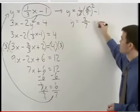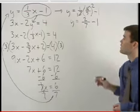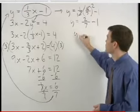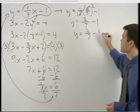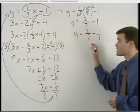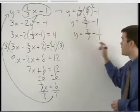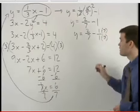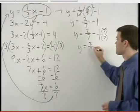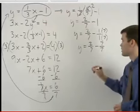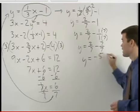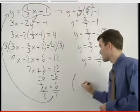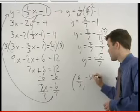So y equals 2/7 minus 1, which can be thought of as y equals 2/7 minus 1/1. We can simplify this by finding a common denominator of 7. Multiply top and bottom of the second fraction by 7 to get y equals 2/7 minus 7/7, which simplifies to y equals negative 5/7. So the solution to this system is (6/7, -5/7).